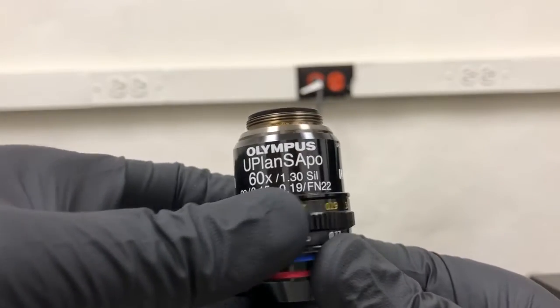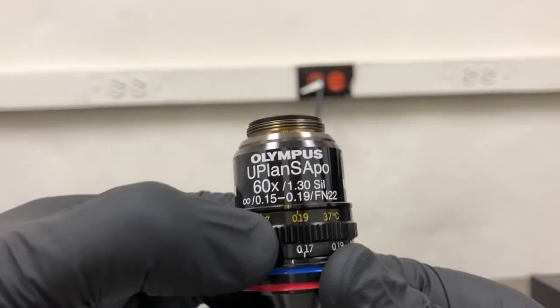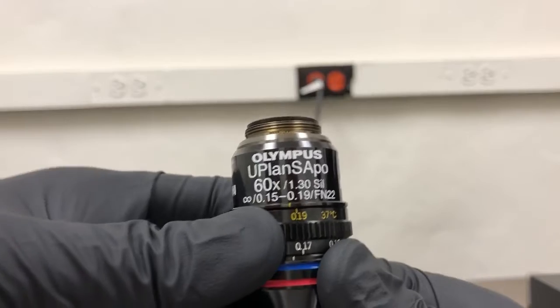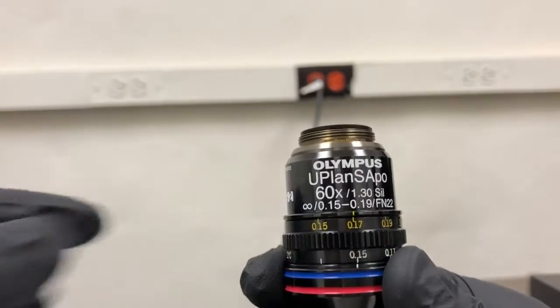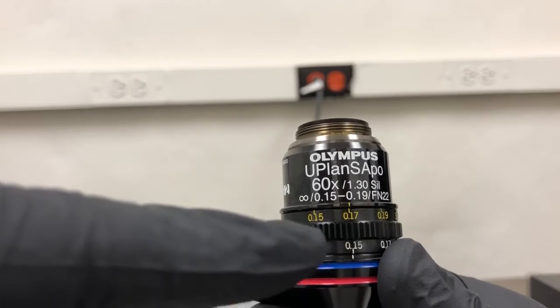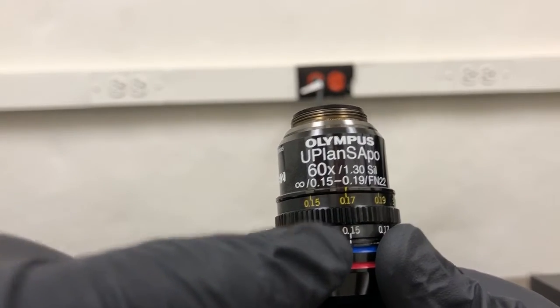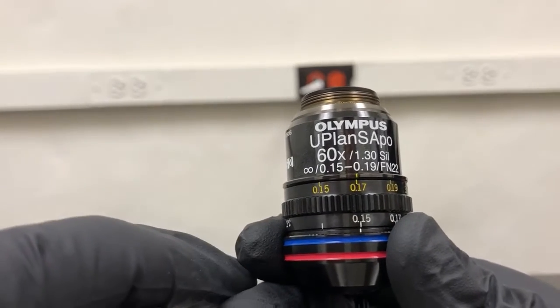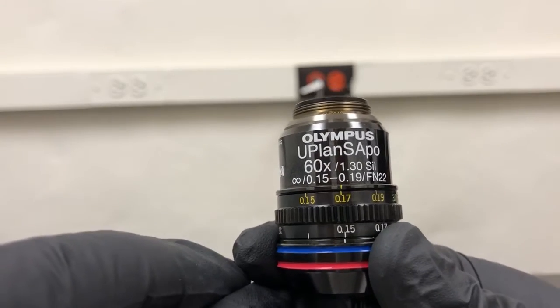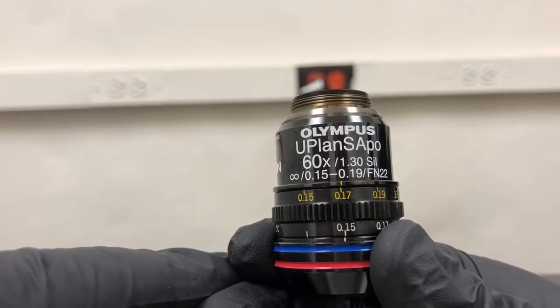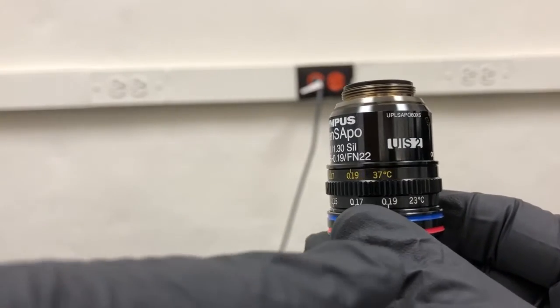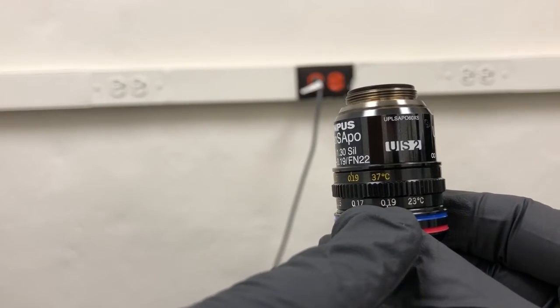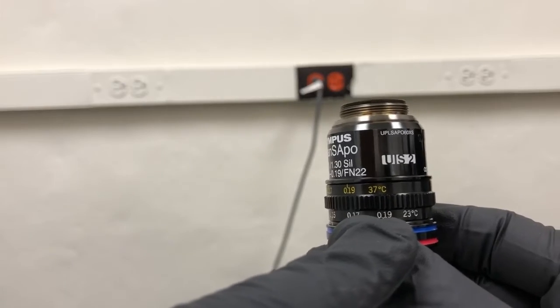When we move this, we can align different numbers either on the yellow set of numbers or on the white set of numbers to those lines. The way this works is the yellow set of numbers are for 37 degrees Celsius, and the white set of numbers are for 23 degrees Celsius, which is room temperature.